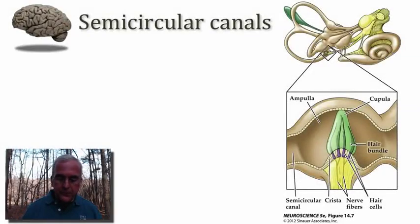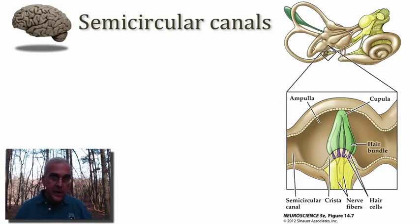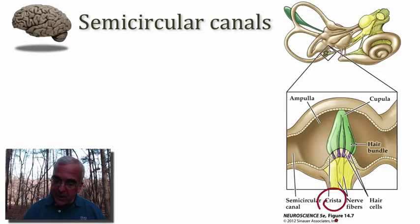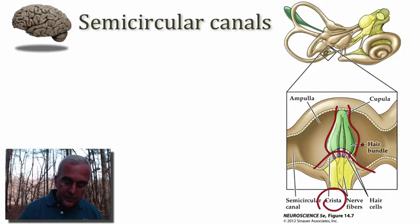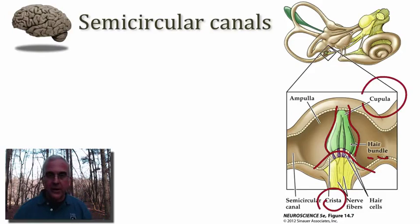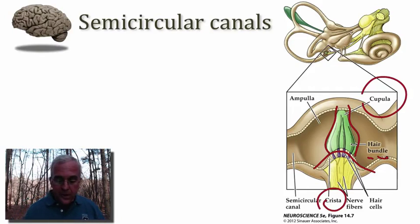Let's focus on the ampulla of a semicircular canal, which is a bulbous expansion at the base of the semicircular canal. This is where we find our sensory epithelium called the crista. Overlying the crista is a gelatinous mass through which protrude the stereocilia of the hair cells. This gelatinous mass is called the cupula, and we see the bundles of hair cells projecting into it.